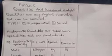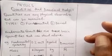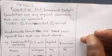In today's video, we are going to be talking about quantities and dimensional analysis. Quantities are any physical observable that can be measured. We have two types: the fundamental and the derived. Fundamental quantities are those basic, rudimental, foundational quantities, and they can stand alone.